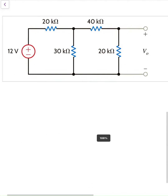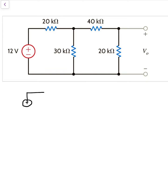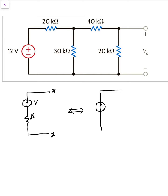So how can you use source transformation? If a voltage source is given with a resistance in series — here R, here V, with X and Y terminals — this can be converted into a current source I with the resistance R connected in parallel to the current source, with terminals X and Y.